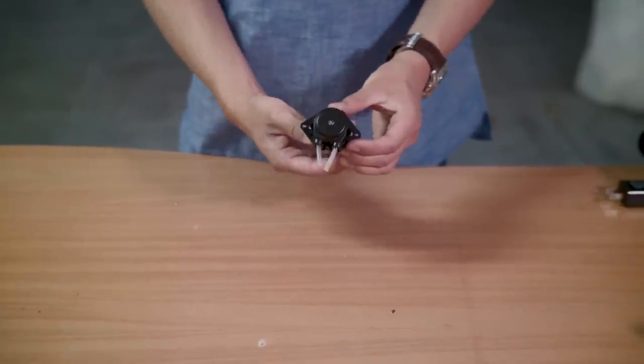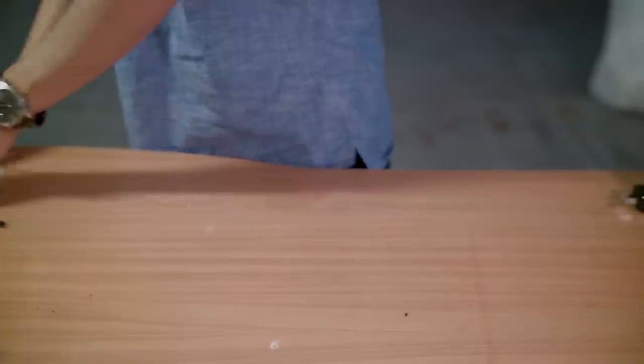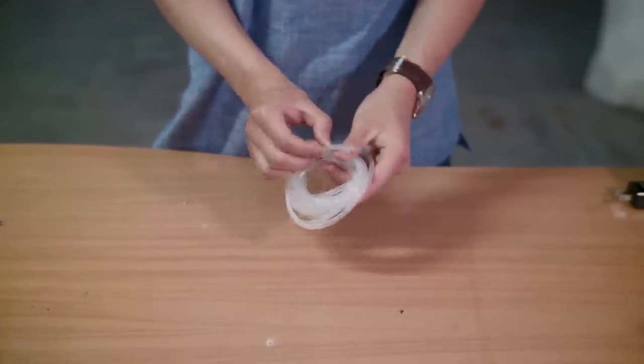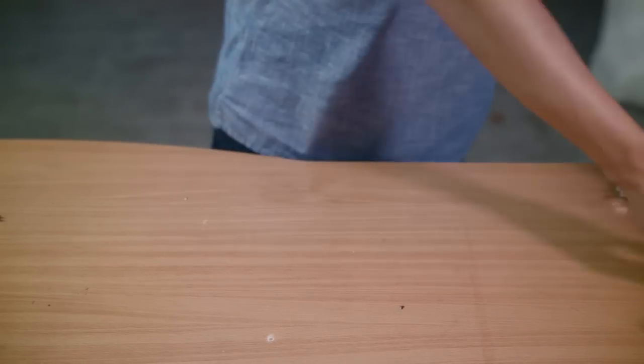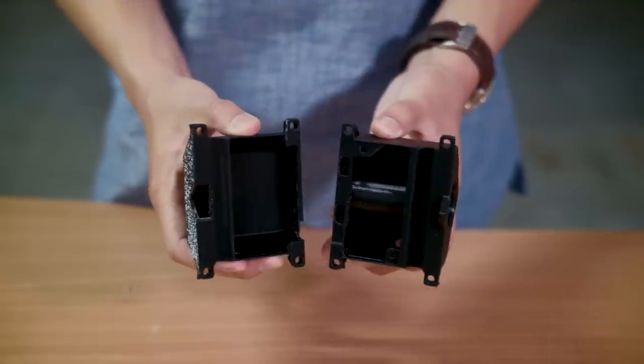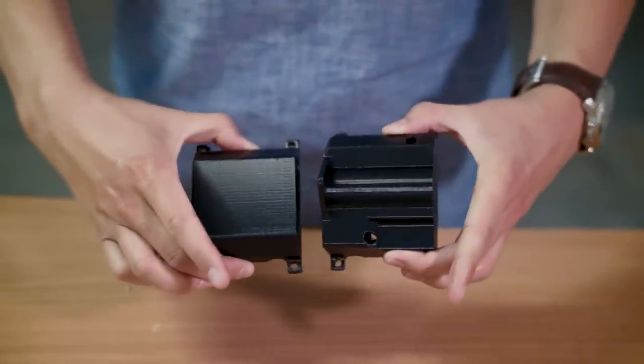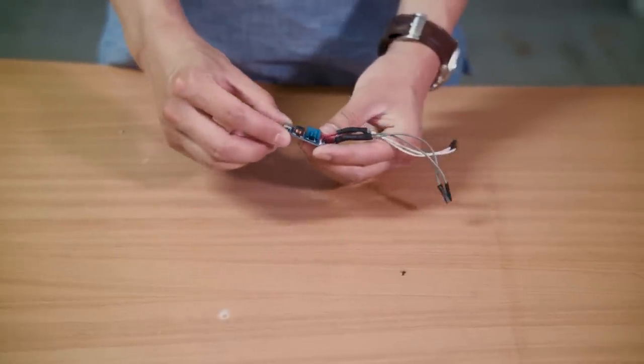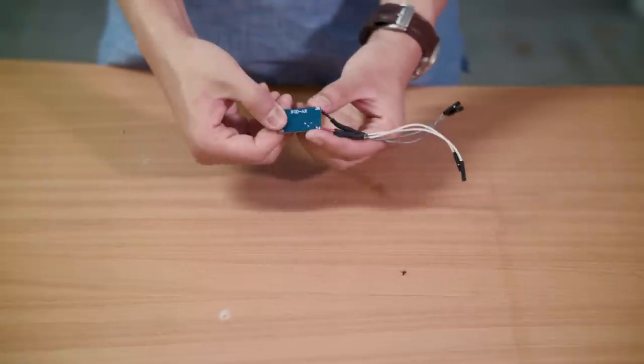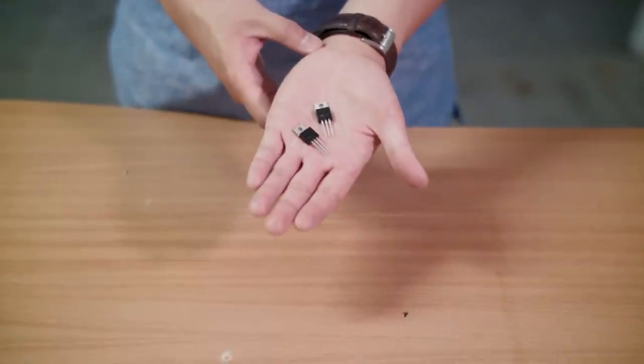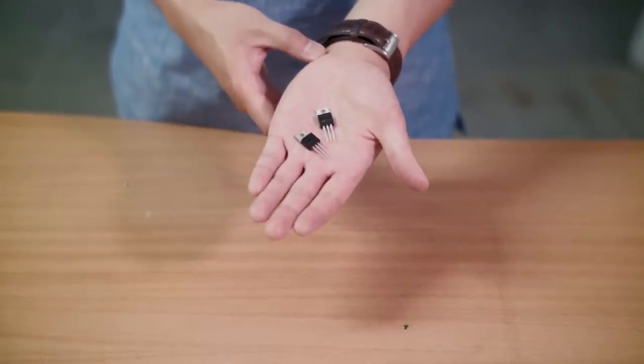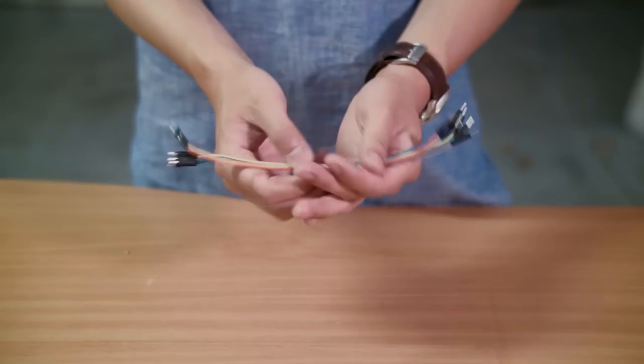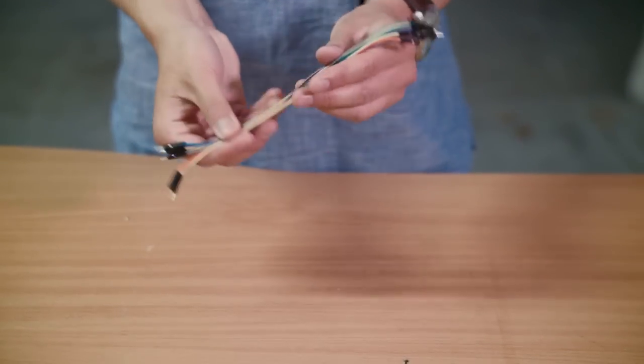For the water we're using this 12 volt peristaltic pump and some tubing so that we can pump the water to the plant. We 3D printed this housing which has a spot for the pump and a mounting point for the Raspberry Pi. We're also using this 12 volt boost adapter that we've used in several of our other projects. To turn the light and water pump on and off with the Raspberry Pi we're using two N-channel MOSFETs. And to wire everything together we have a couple of jumper wires.